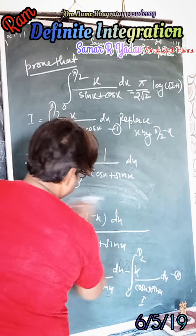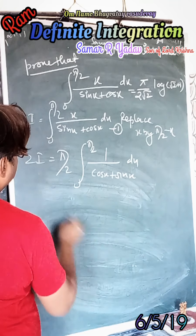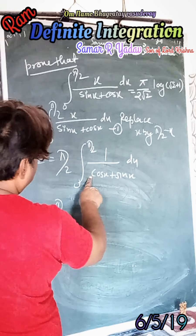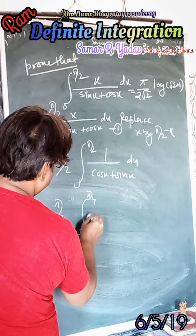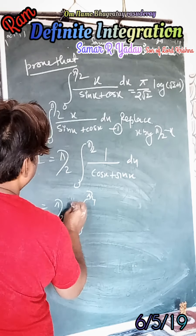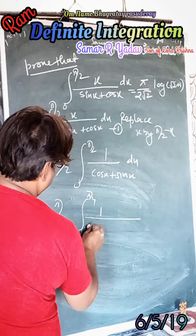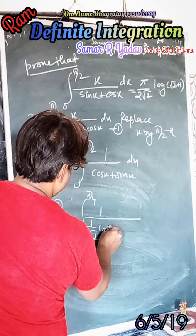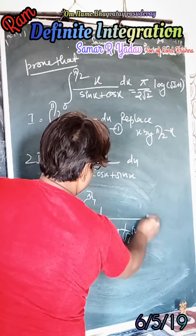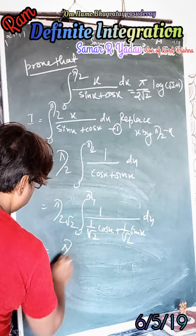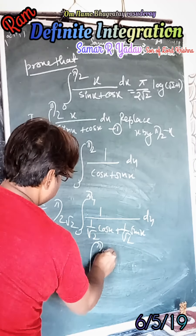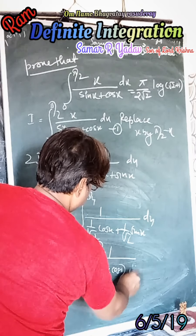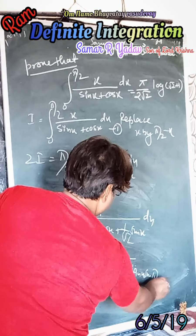Now solving this integral, we multiply and divide by root 2. So we can write 2I equals π/2 times the integral from 0 to π/2 of 1/√2 times 1/(1/√2 · cosx + 1/√2 · sinx) dx, which equals π/(2√2) times the integral from 0 to π/2 of 1/(cosx · cos(π/4) + sinx · sin(π/4)) dx.